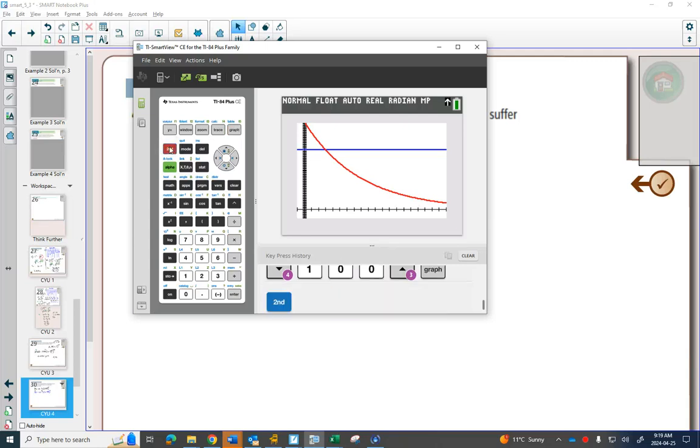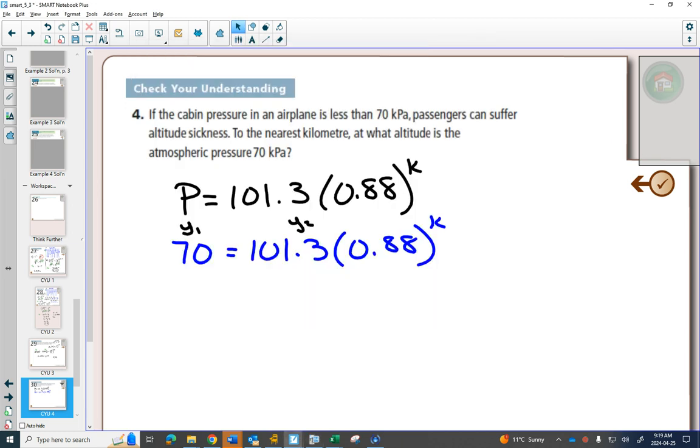But if we couldn't see it on our graph, we might have to change our window for X. I can now go second, calculate, where do these intersect? Enter, enter, enter. 2.891. Three decimal places. Just under 3 kilometers, which is just under 3,000 meters. Does it ask to round it to the nearest? Oh, to the nearest kilometers, so I lose a rounding error for not rereading my question if I haven't reread it.